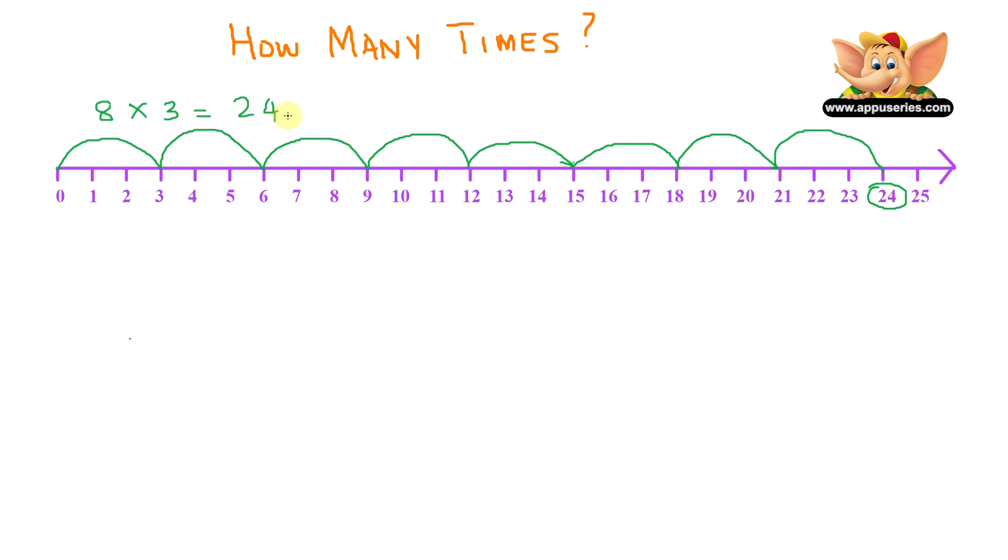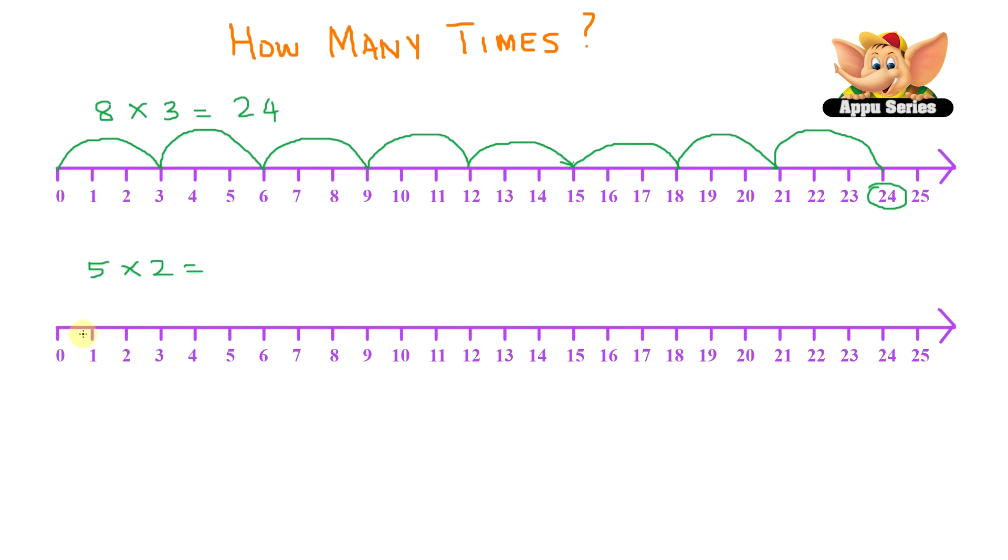Now let's try doing another one. Let's do 5 times 2. This means you'll jump on every second number of the number line starting at 0, 5 times. So starting from 0, we jump 1, 2, 3, 4, 5. And now we reach 10. So 5 times 2 equals 10.